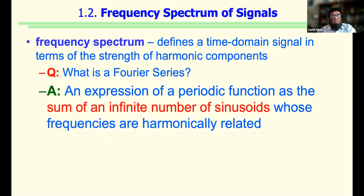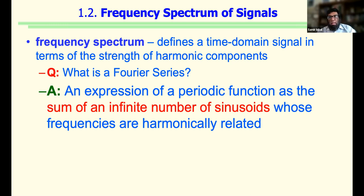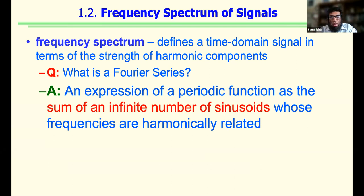A Fourier series is an expression of a periodic function as the sum of an infinite number of sinusoids. We have harmonics at different frequencies, but as amplitudes get smaller we can ignore them and make it finite for our use. We can take any arbitrary function and transfer it into its frequency spectrum using Fourier transformation as the mathematical tool.